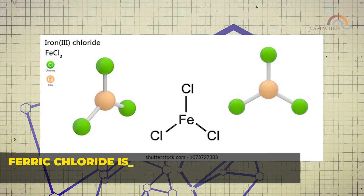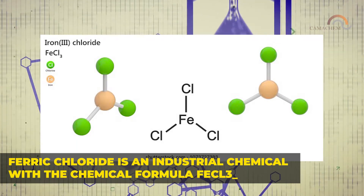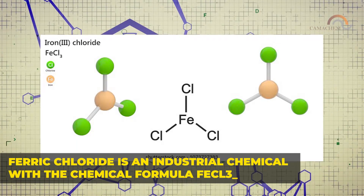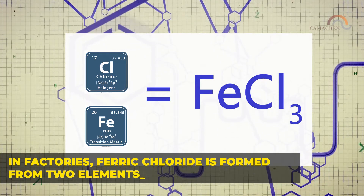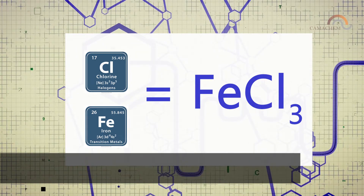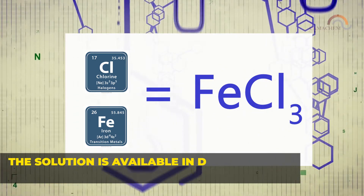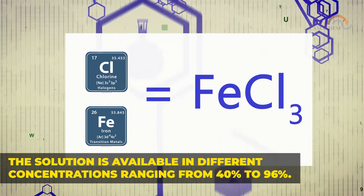Ferric chloride is an industrial chemical with the chemical formula FeCl3. In factories, ferric chloride is formed from two elements: iron and chlorine. The solution is available in different concentrations ranging from 40 to 96%.